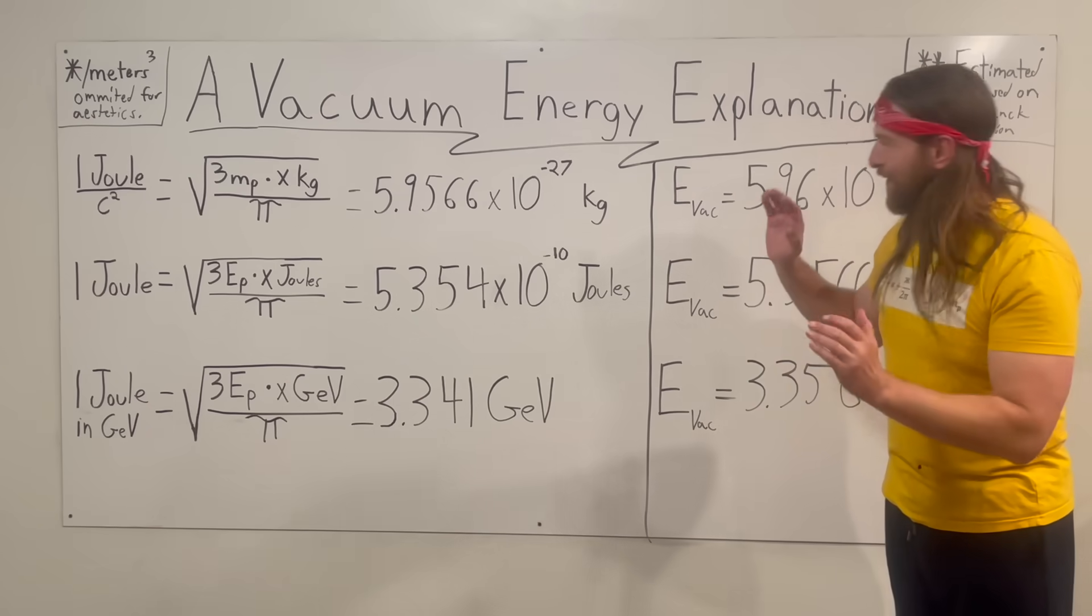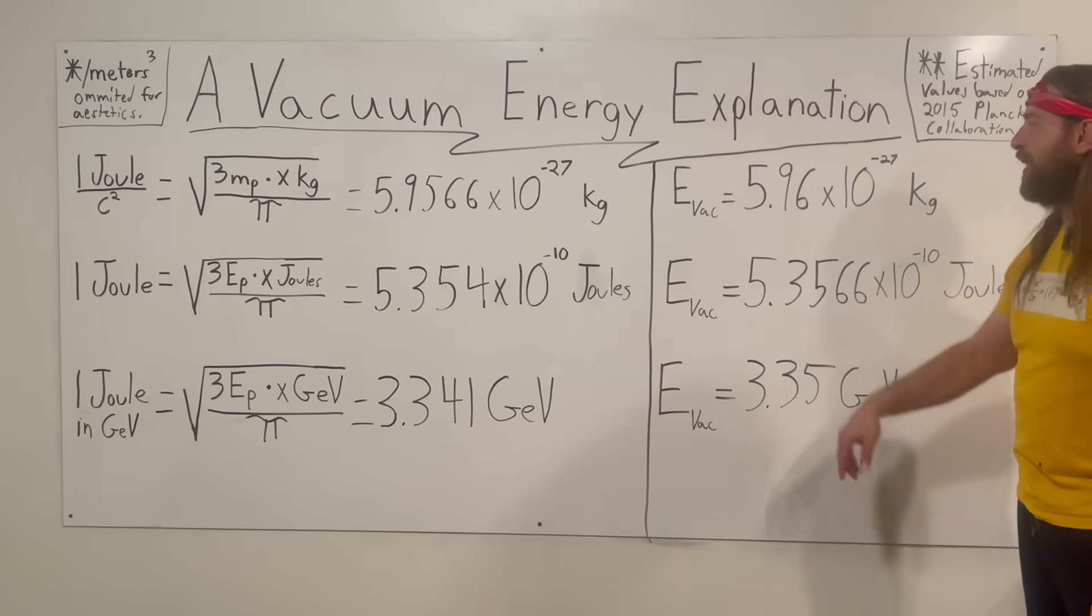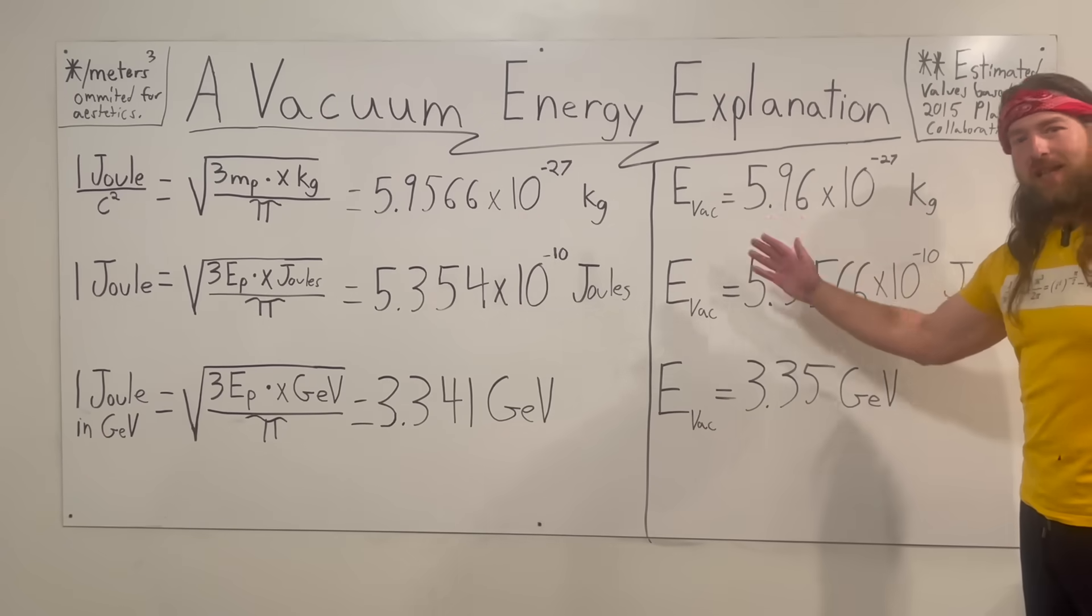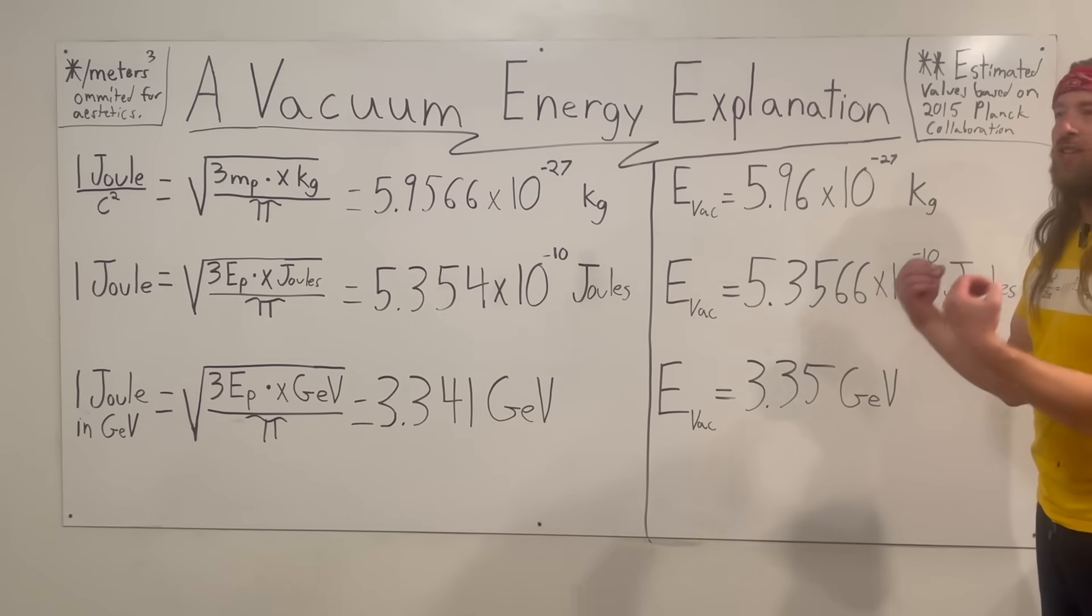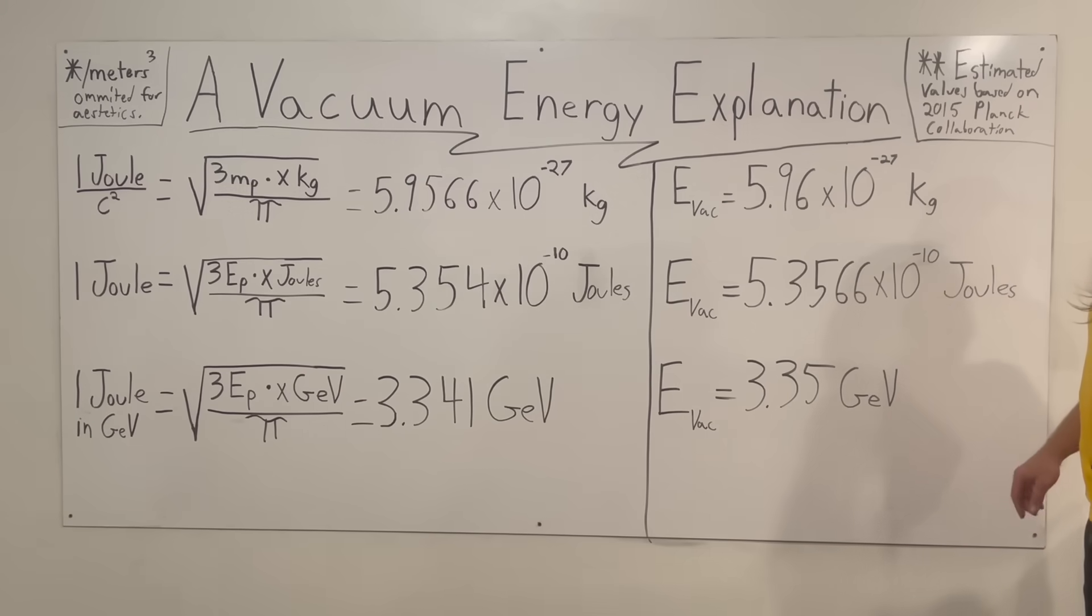I'm omitting it because it makes it nice, short, and pretty. That's why on this side, rather than pvac (the pressure of the vacuum), we're doing evac (the energy of the vacuum), and then you divide it by meters cubed to get your volumetric pressure term.